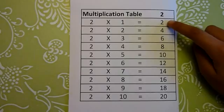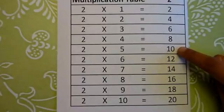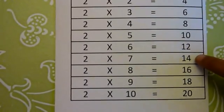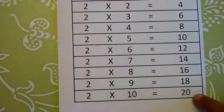So, 2 1's are 2, 2 2's are 4, 2 3's are 6, 2 4's are 8, 2 5's are 10, 2 6's are 12, 2 7's are 14, 2 8's are 16, 2 9's are 18, 2 10's are 20.